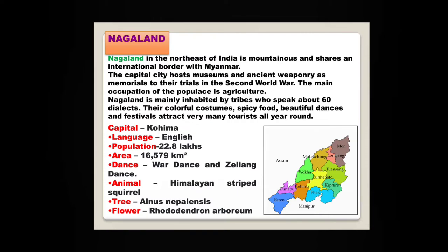Nagaland, in the northeast of India, is mountainous and shares an international border with Myanmar. The capital city hosts museums and ancient weaponry as memorials to their trials in the Second World War. The main occupation of the population is agriculture. Nagaland is mainly inhabited by tribes who speak about 60 dialects. Their colourful costumes, spicy food, beautiful dances and festivals attract many tourists all year round. The capital is Kohima, and the animal mostly found here is the Himalayan striped squirrel.